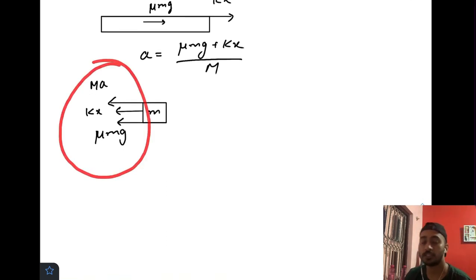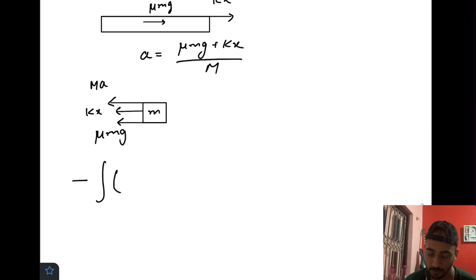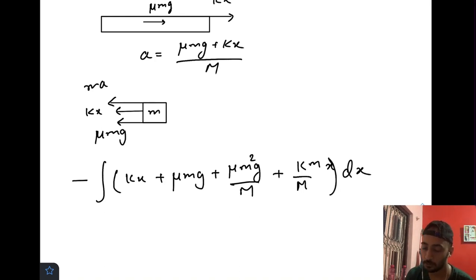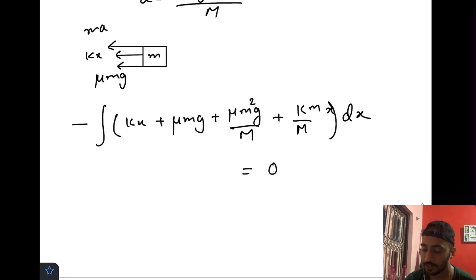Work done by all these forces would be the change in kinetic energy of small m. Work done is negative integral of (kx + μmg + μmg·m/M + kx·m/M) dx. This is the total work done by all the forces on the small block, and it equals final kinetic energy with respect to the plank minus initial kinetic energy with respect to the plank.